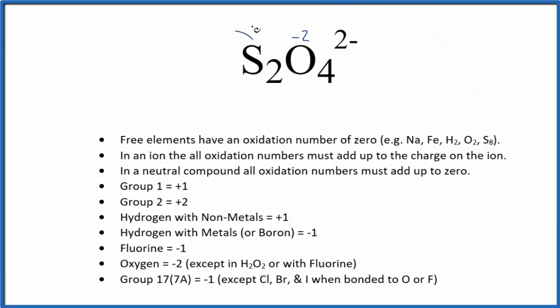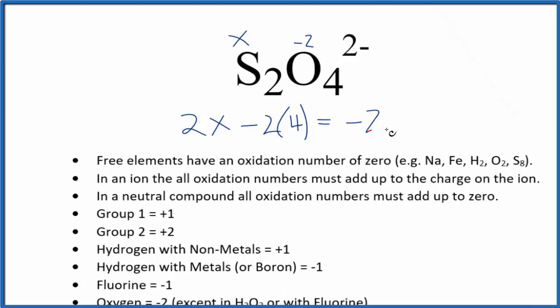And let's call the sulfur X. Now we can just set up an equation. 2X minus 2 times the 4, since we have 4 oxygens, that equals negative 2.